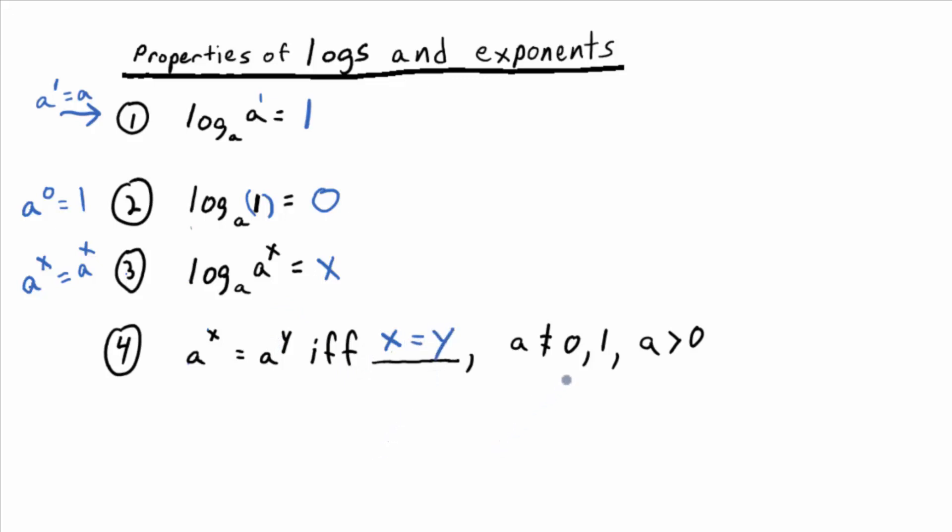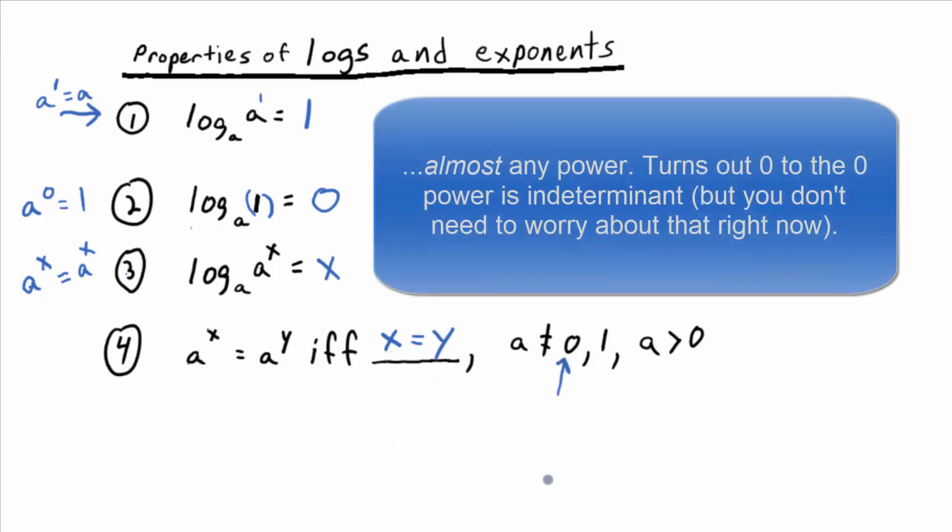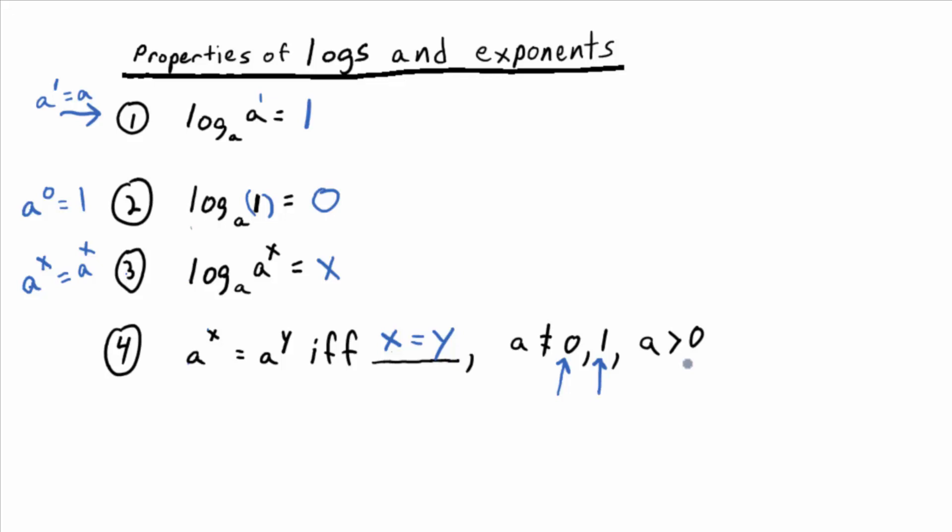There's a couple of restrictions. A can't equal zero, right? Because you raise zero to any power, you get zero. Same thing with A equals one, and we insist that A is bigger than zero. Okay, so if you have an equation, exponents with the same base on both sides, you can drop the base and set the exponents equal. That's what that says.